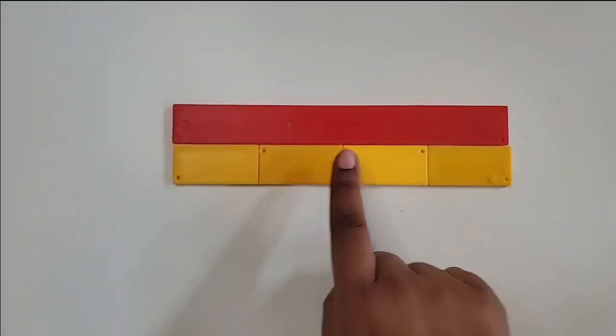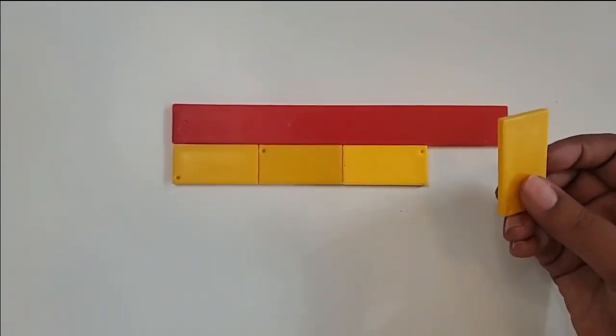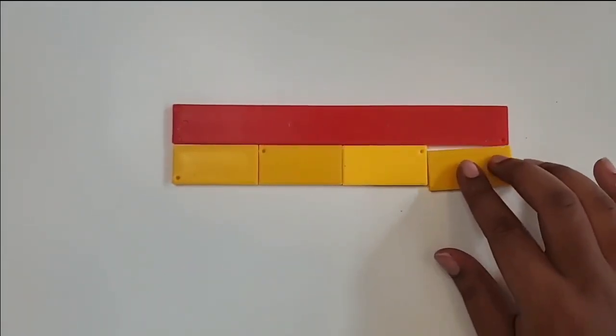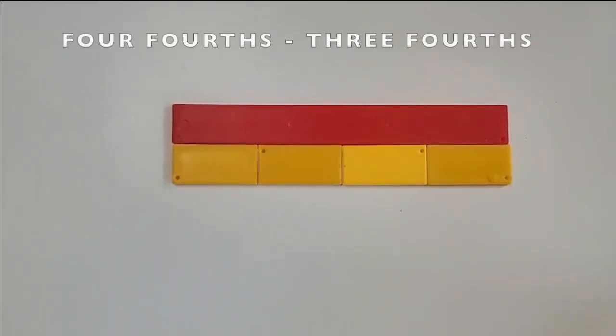So we have one, two, three, four of the fourth-sized pieces because it takes four of them to make one whole. We're going to subtract three of these fourths.